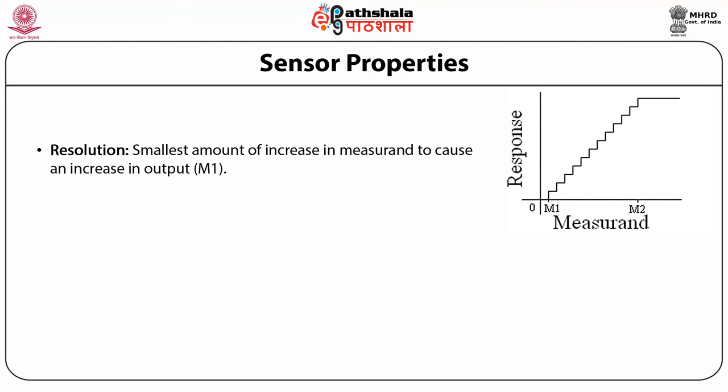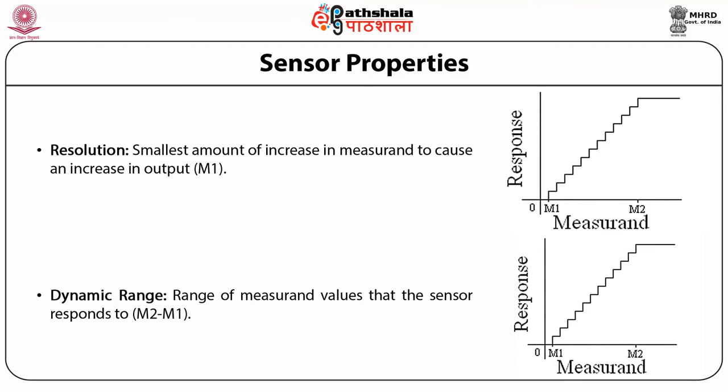Dynamic range is the range of measurement values that the sensor responds to, that is m2 to m1. Span or input full scale (FS) is the dynamic range of stimuli that may be converted by the sensor; it represents the highest possible input which can be applied to the sensor without causing unacceptably large inaccuracy.